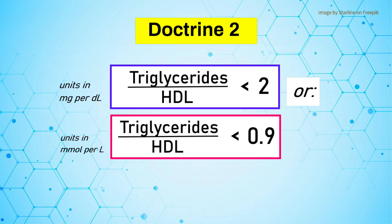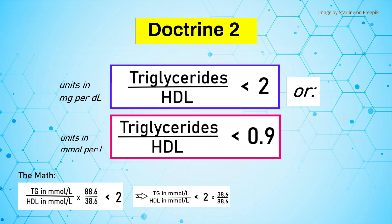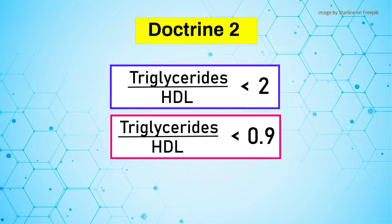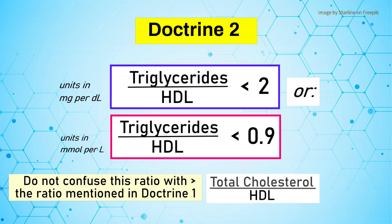In Doctrine 2, the ratio of triglycerides to HDL shall not exceed 2, or 0.9, depending on whether millimoles or milligrams are used by the lab. Do not confuse this ratio with the total cholesterol to HDL ratio mentioned in Doctrine 1.